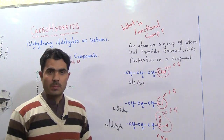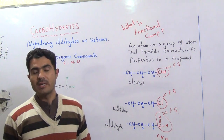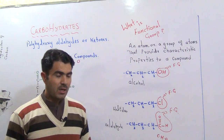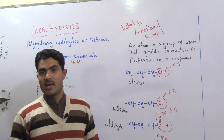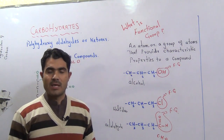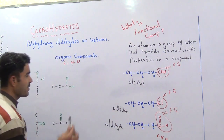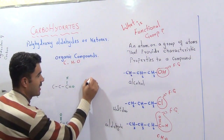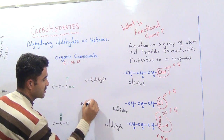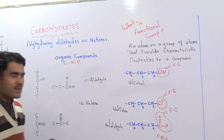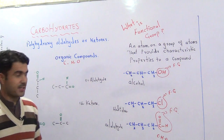Once we understand functional groups, we can come to the definition of carbohydrate. Keep in mind there are many functional groups; we will only refer to the special ones related to the definition of carbohydrate. In the definition of carbohydrate, to clear your concept you must know two very special types of functional groups: number one, aldehyde, and number two, ketone. Once we are clear with these two words, we will easily understand the definition and concept of carbohydrate.